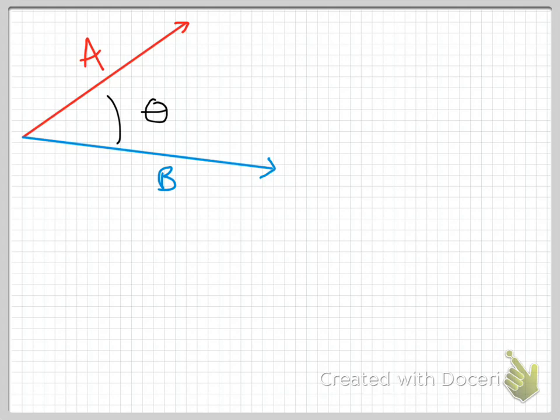We're going to deal in this video with the dot product. And the notation looks like this: Vector A dot vector B. And that's supposed to be a dot. And as I said, this is sometimes called the scalar product. And that's because A dot B, which are vectors, results in a scalar. So this is equal to some number.